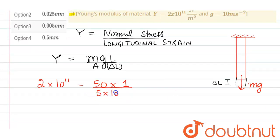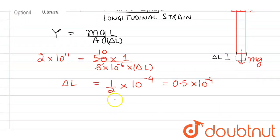So on solving here, cancelling 5 with this one, we get ΔL to be equal to 1 upon 2 into 10 to the power, that will be equal to minus 4, or you can say 0.5 × 10⁻⁴, or you can say it will be equal to 0.05 mm.